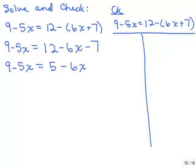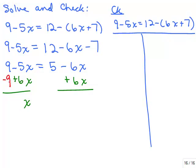Now we're ready to get the variables on one side and constants on the other. Let's add 6x to both sides so there are no variables on the right. Negative 5x plus 6x will be x. Then I need to get rid of the positive 9, so subtracting 9 from both sides gives me 5 minus 9 equals negative 4.